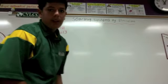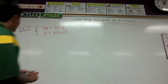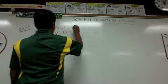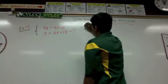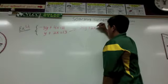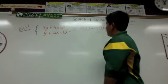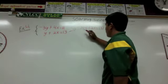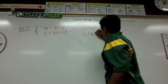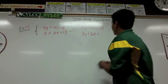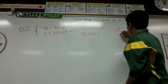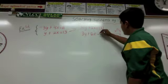Today we're going to continue on with example 4. Since we're going to cancel out the y, we're going to multiply 3 to the second equation. So it's going to be 3 times y plus 2x equals 13. Multiplying through by 3 gives us 3y plus 6x equals 39.